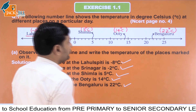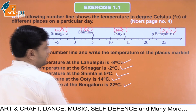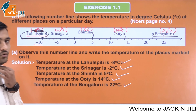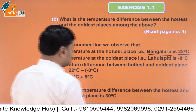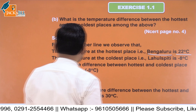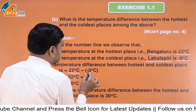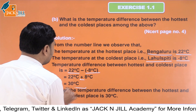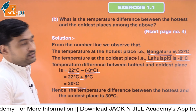Part (b): What is the temperature difference between the hottest and coldest place among the above? The hottest place is Bangalore at 22 degrees Celsius and the coldest place is Leh at minus 8 degrees Celsius. The difference is 22 minus (minus 8) equals 22 plus 8, which is 30 degrees Celsius. Hence the temperature difference between the hottest and coldest place is 30 degrees Celsius.